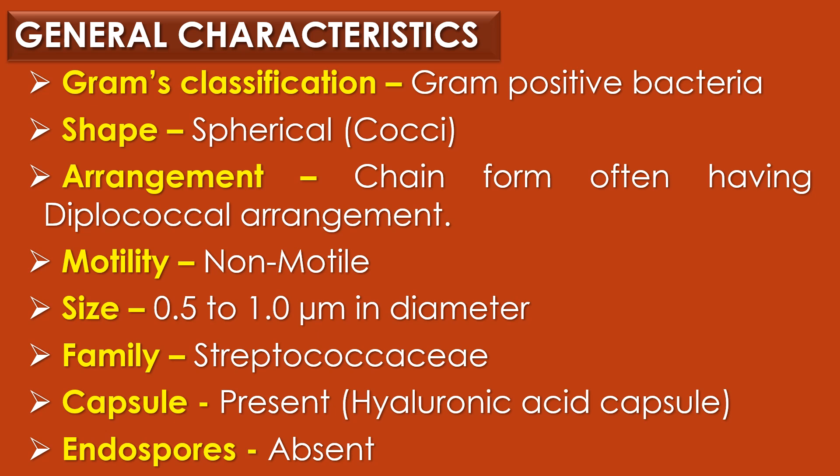Streptococcus pyogenes is a gram-positive, spherical-shaped bacteria, arranged in the form of chains and often having a diplococci arrangement. It is non-motile in nature and its size ranges from 0.5 µm to 1 µm in diameter. It belongs to the family Streptococcus A. Capsules are occasionally present and are made up of hyaluronic acid. Endospores are absent.